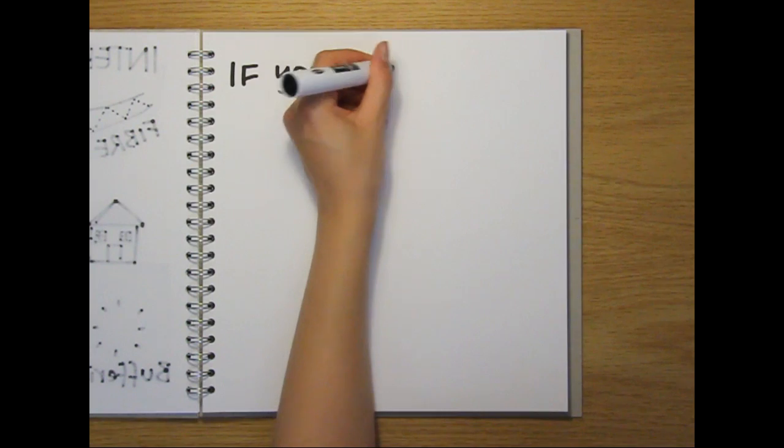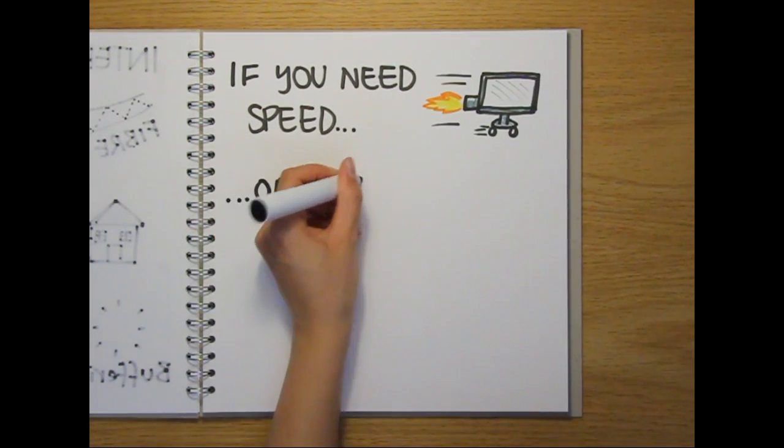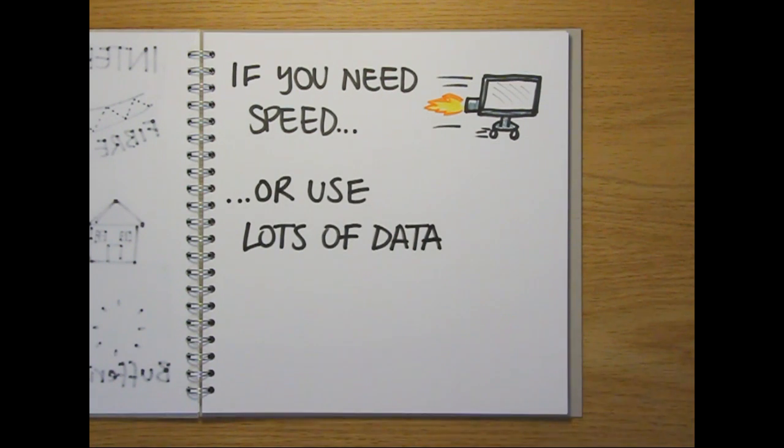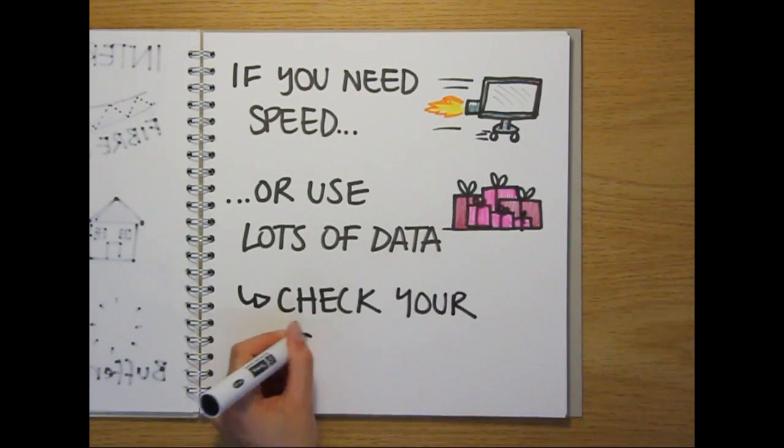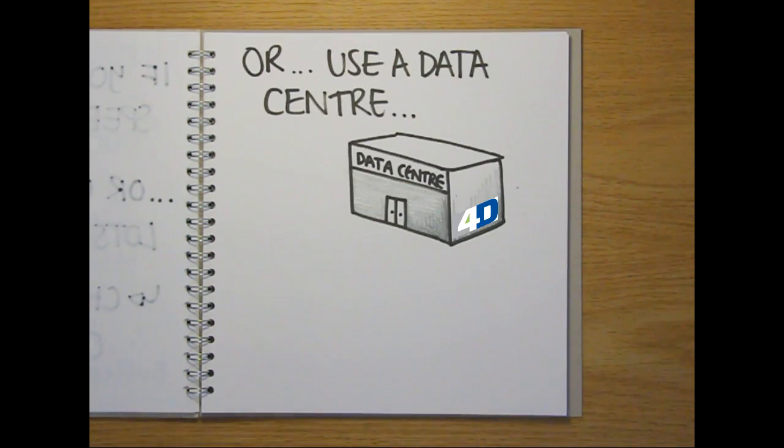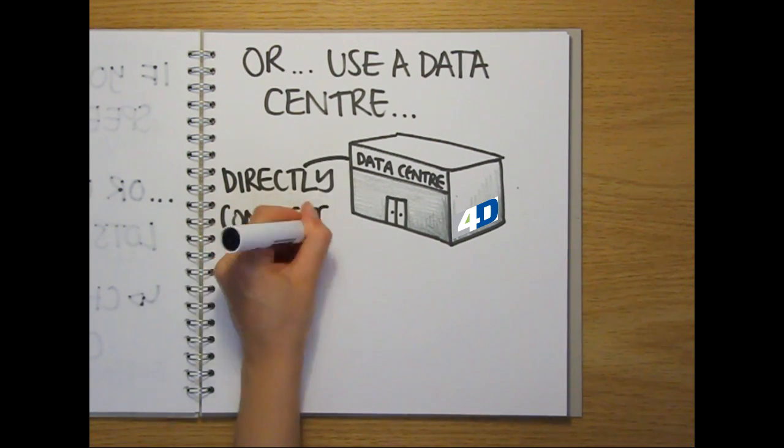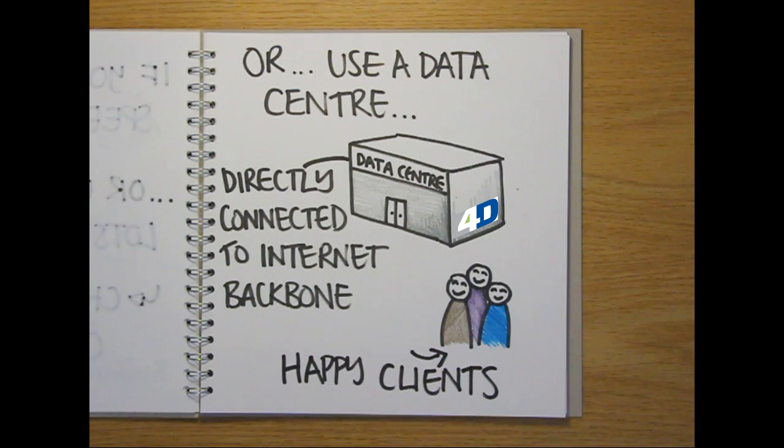So if you're a business that needs to provide a speedy response to visitors to your website, or if you're sending or receiving large quantities of data over the internet, it's sensible to check regularly to see that you're getting the most reliable and fastest connectivity that's available for your particular budget. Or you could consider using a data centre. Because these are connected directly to the internet backbone, you can minimise the delays in sending out data to your clients. When it comes to the internet, it pays to be well connected.